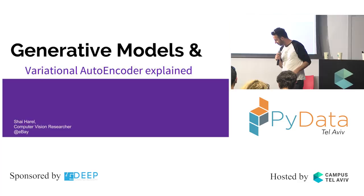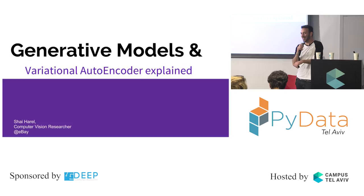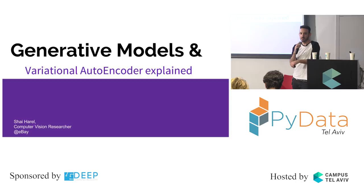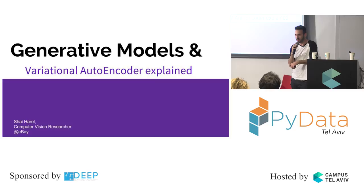Hello everybody, my name is Shirel. I'm a computer vision researcher at eBay. Previously I was consulting at a company named Corrigon. I was on my way to University of Southern California when eBay decided to purchase this company, and here I am.